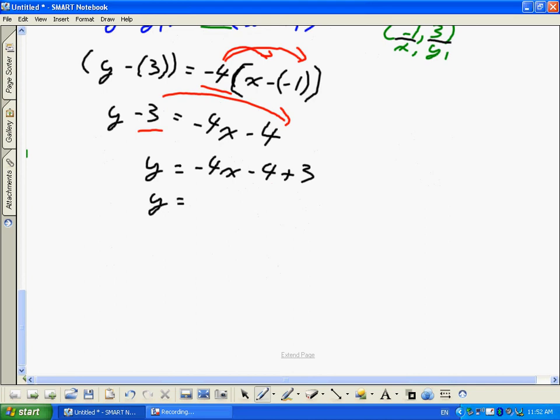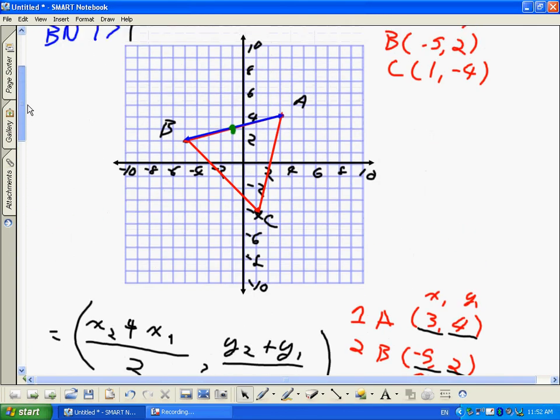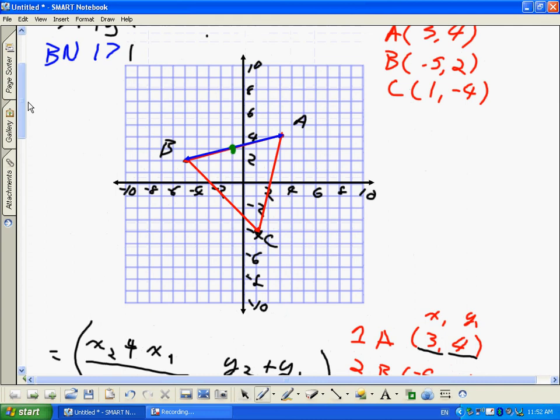Y equals negative 4X minus 4 plus 3. We simplify. Our equation of our line is Y equals negative 4X subtract 1. So I now have a slope, and we had that same slope before, our negative 4. And our Y intercept is going to be negative 1. So we're at the bottom of this page. The negative 1 is going to be, we scroll all the way back up here. Let's try to draw a straight line as perpendicular to that as possible.